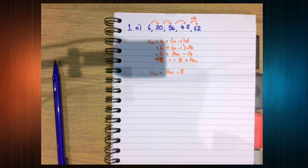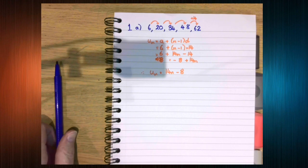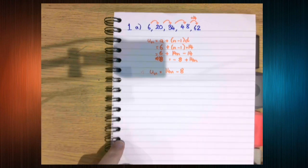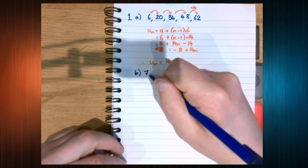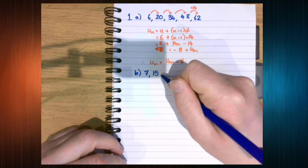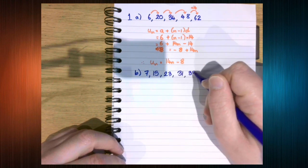So what I'd like you to do is pause and have a go at part b and then we'll go through that now. So part b we've got 7, 15, 23, 31, 39.